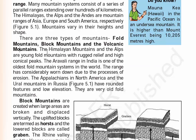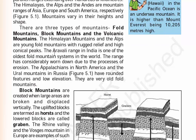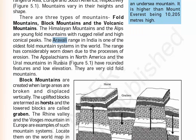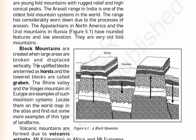The Himalayan mountains and the Alps are young fold mountains. The Aravali range in India is one of the oldest fold mountain systems in the world. Some of the old mountains are the Ural mountains, which is between Asia and Europe, and the Appalachians in North America — they are old fold mountains. Now let's read about block mountains.